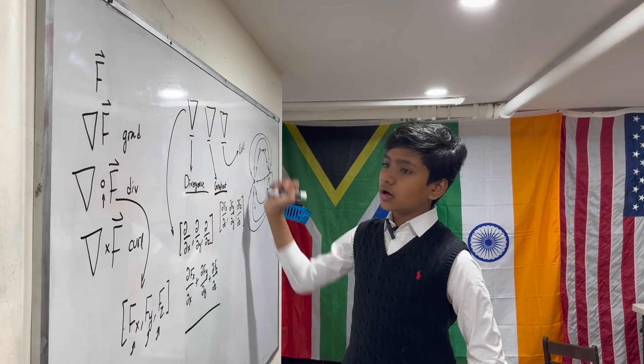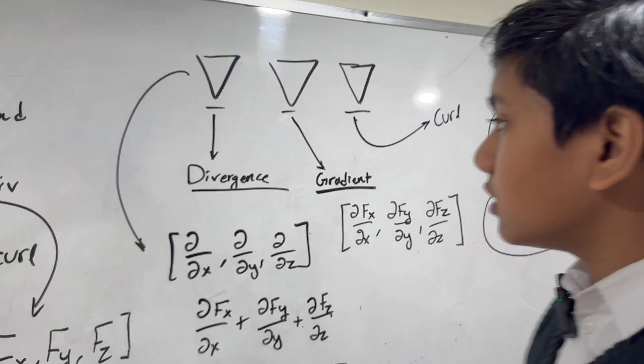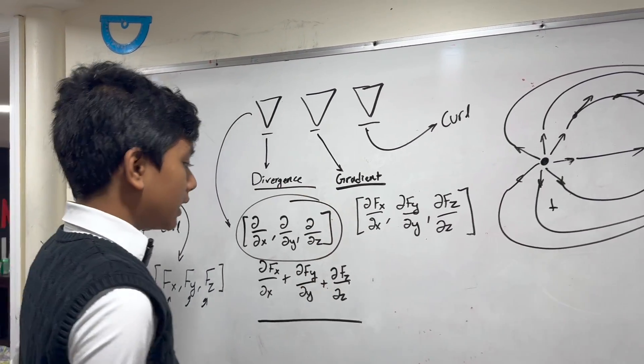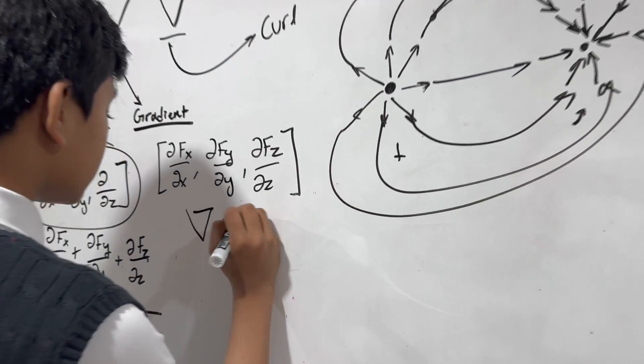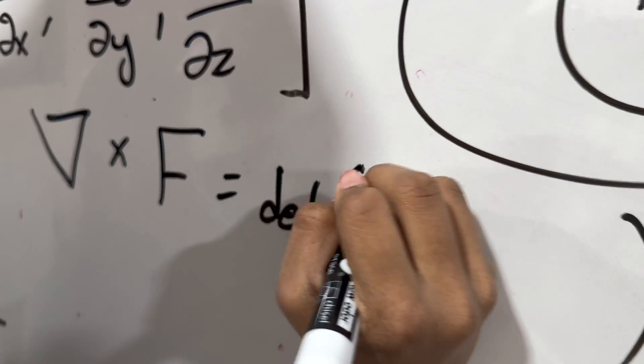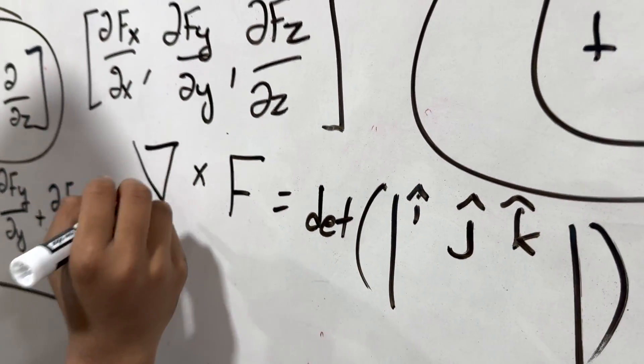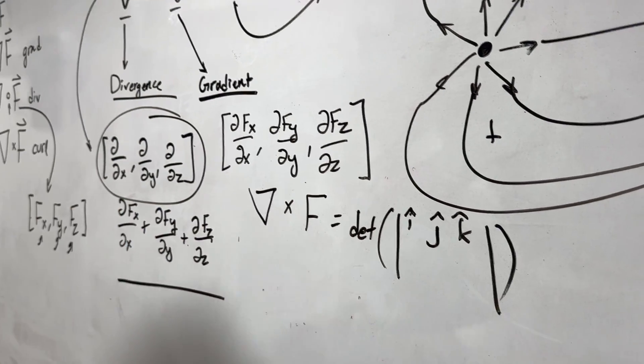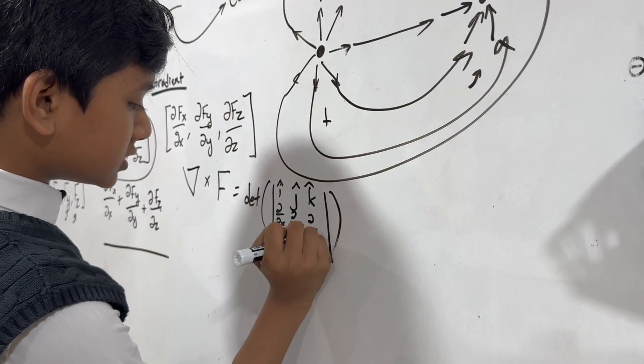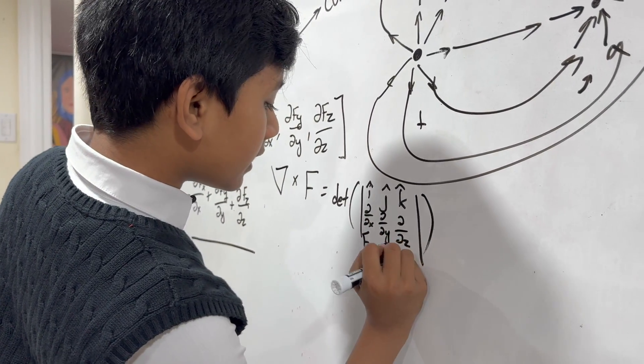So, finally, we can talk about curl. So, curl has a very formalized definition. Once again, we can use this definition of nabla in order to use the cross product notation to say that the curl is the determinant of the matrix I, J, K. And then, you have the components of nabla, which are partial partial x, partial partial y, partial partial z. And then, you have the components of F, fx, fy, fz.